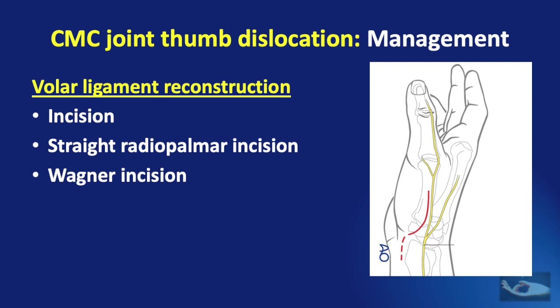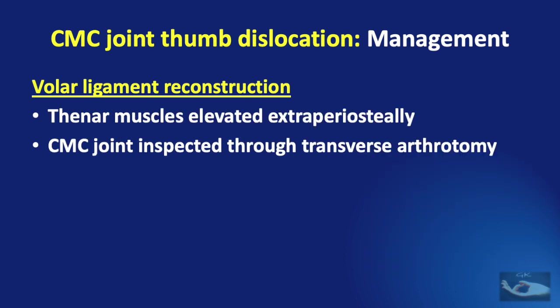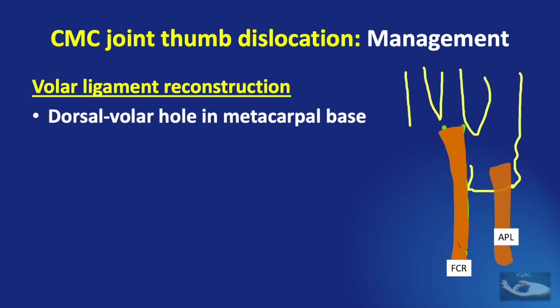Better exposure is afforded by the Wagner incision, but care must be taken to avoid injuring the branches of the superficial radial nerve. After making the skin incision, the thenar muscles are elevated extraperiosteally. The CMC joint is inspected through a transverse arthrotomy, and a dorsal-to-volar hole is made in the metacarpal base perpendicular to the plane of the thumbnail.